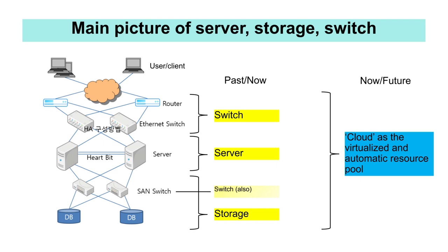In the past, and still today, this configuration of servers, storage, and switches was common. However, these IT infrastructures are evolving to become virtualised and automated and operate as a single resource pool. In this case, it can be called a cloud. This is what has already happened, now and in the future. Next, I will explain each server, storage, switch, and cloud.